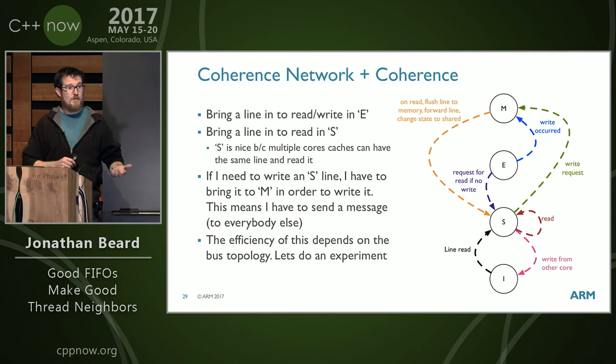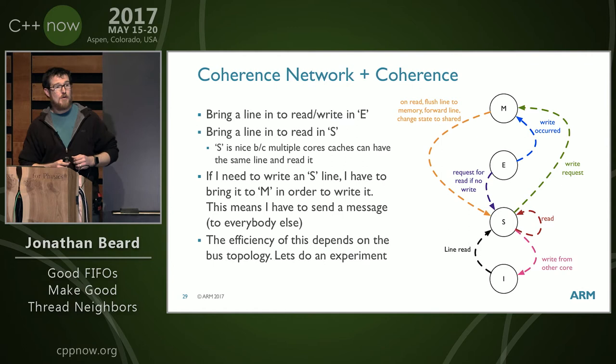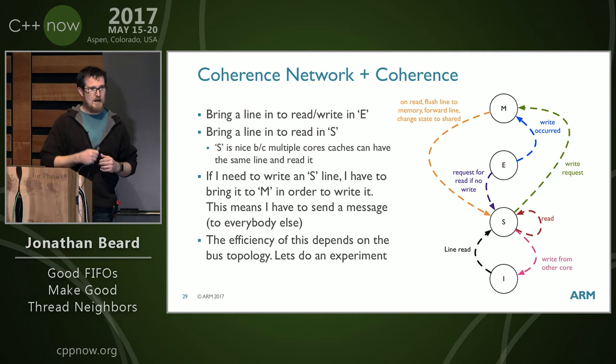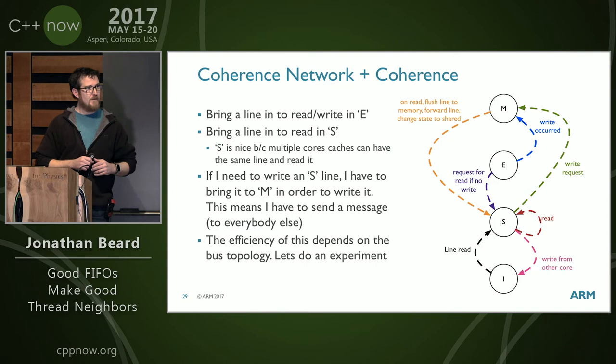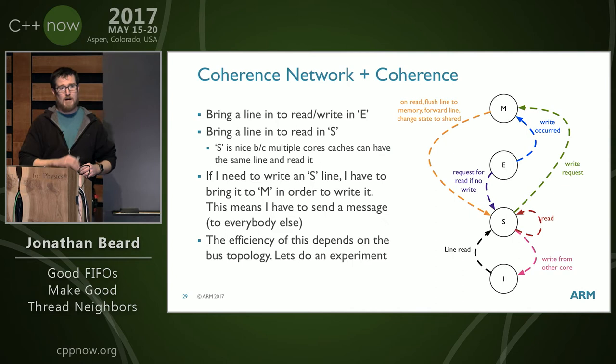Shared state is cool because multiple cores can look at the same line. The problem comes when core one wants to write that line. It has to say, 'Core zero, invalidate that line and send me an ACK.' Once done, core one moves the line to modified state and completes the write. That's three or four extra bus steps — actually a few more that I'm skipping for simplicity. Things are a lot more complicated under the hood, and we have to keep this in mind when optimizing FIFOs.